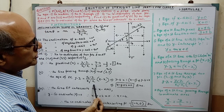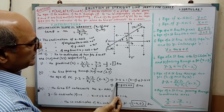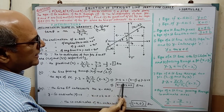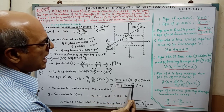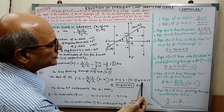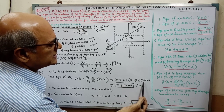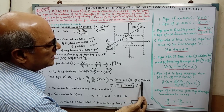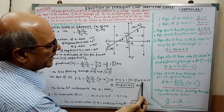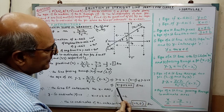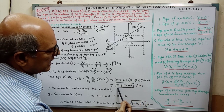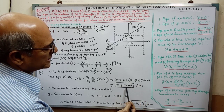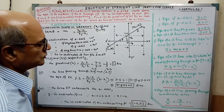After writing the equation with the relevant values and simplifying, the result comes out as x minus y plus 4 equal to 0. This is the answer for the second part.